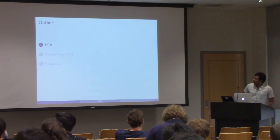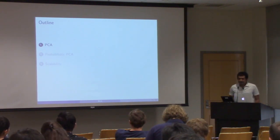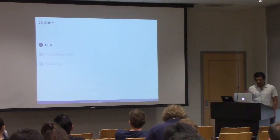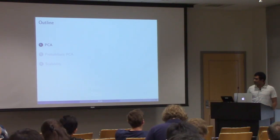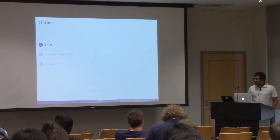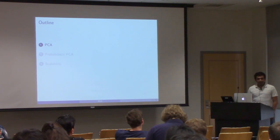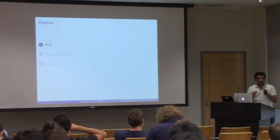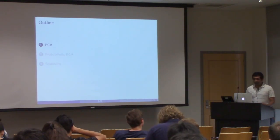I have this talk structured in three parts. First, I want to talk about PCA itself and go into the mathematical formulation so that we are all on the same page. In the second part, I will talk about probabilistic PCA — a probabilistic model for PCA. In the third part, I will talk about scalability issues: how do we apply PCA on large-scale data sets? Feel free to interrupt me at any point if things are unclear.